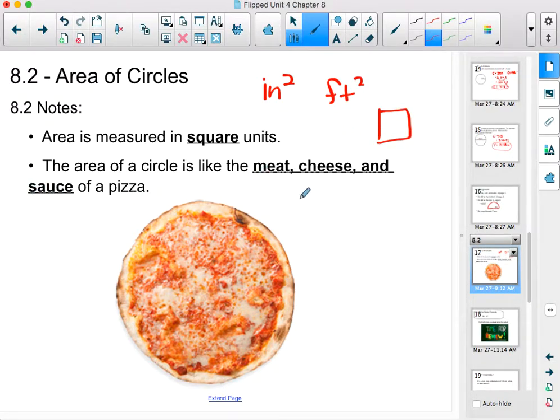The area of a circle is like the meat, cheese and sauce of the pizza. If you remember from the last video, we talked about the circumference being the crust. Well, the area is all the good stuff on the inside, so remember that.